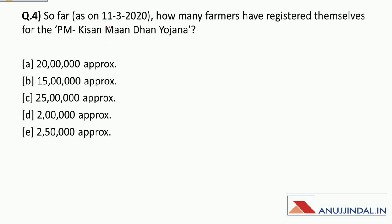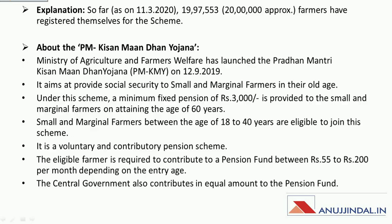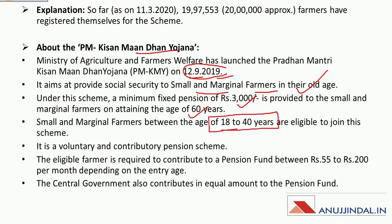Question four: As on 11 March 2020, how many farmers have registered themselves for PM Kisan Maandhan Yojana? This scheme was launched on 12 September 2019 and is a social security scheme for small and marginal farmers. Under this scheme, a fixed pension of rupees 3000 is provided to farmers when they attain the age of 60 years. The entry age gap for the scheme is 18 to 40 years.